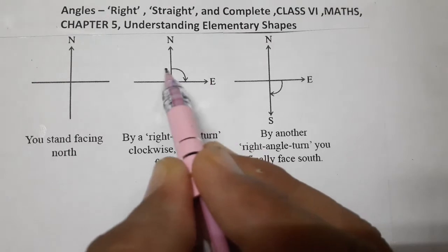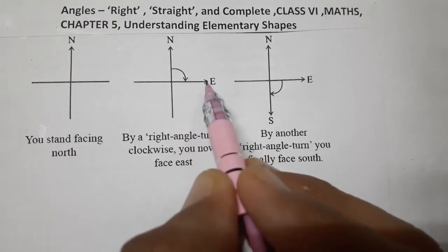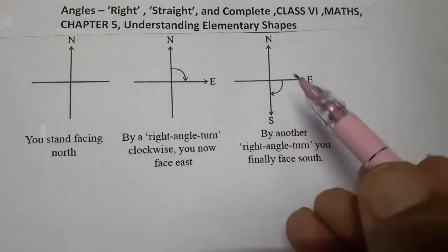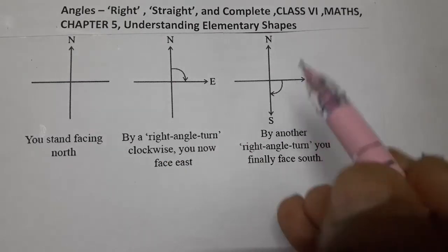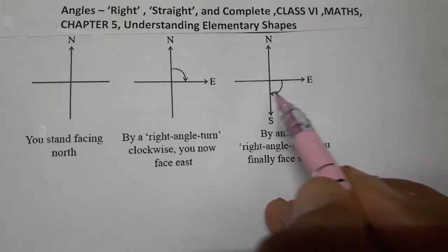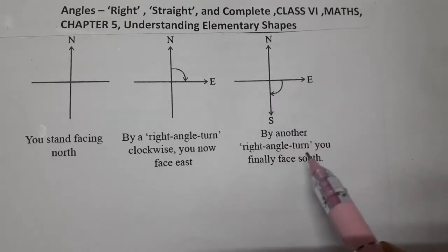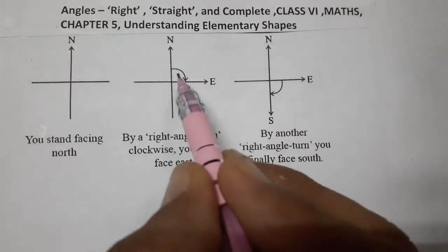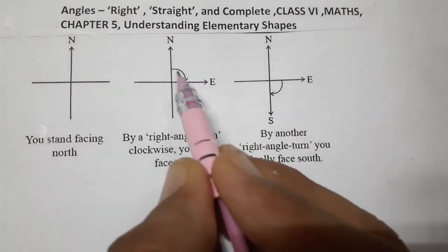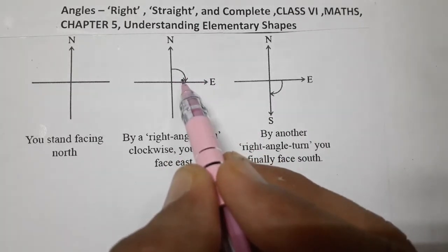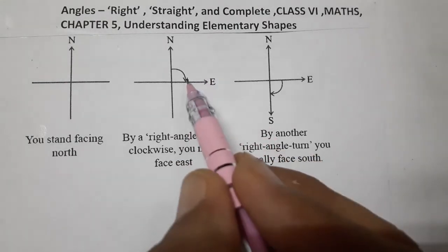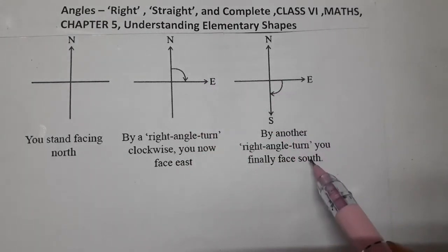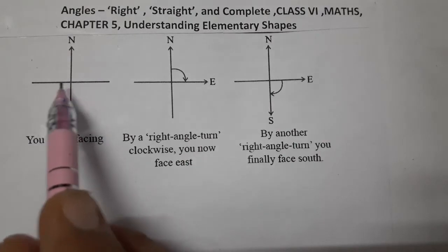From north, if you are moving one right angle, you will get east. Now, suppose you move another right angle — if you move another right angle, then you finally face south. For one right angle movement you are facing east; for two right angle movement you are facing south, if you started at north.